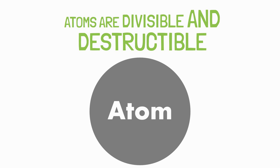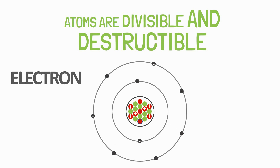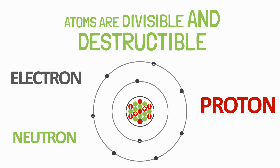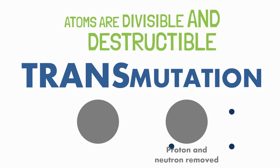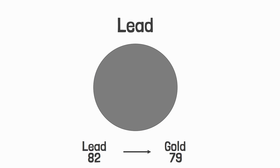But this analogy failed since atoms are actually divisible. It is well known that atoms have further subdivisions: electrons, protons and neutrons. So yes, atoms can be divided. Another evidence that atoms can be divided and destroyed is transmutation. In transmutation, protons and neutrons are removed from atoms or even added into them, so we can destroy and convert an atom into an atom of another element.